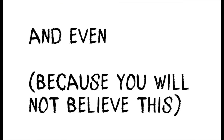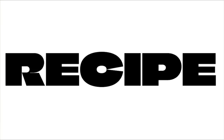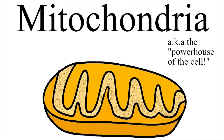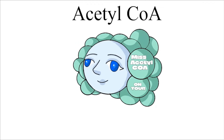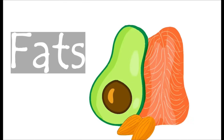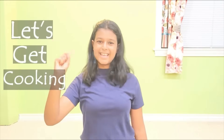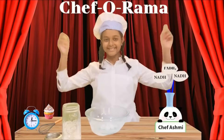It powers our thoughts, our muscles, and even our heartbeat. But how is it made? One of the most important processes is the Krebs cycle. It's a really important recipe in a cell, with the mitochondria acting as our kitchen. Our main ingredient is acetyl-CoA, which we get from the fats and carbs in the food we eat. Let's get cooking! Welcome to Chef-O-Rama!